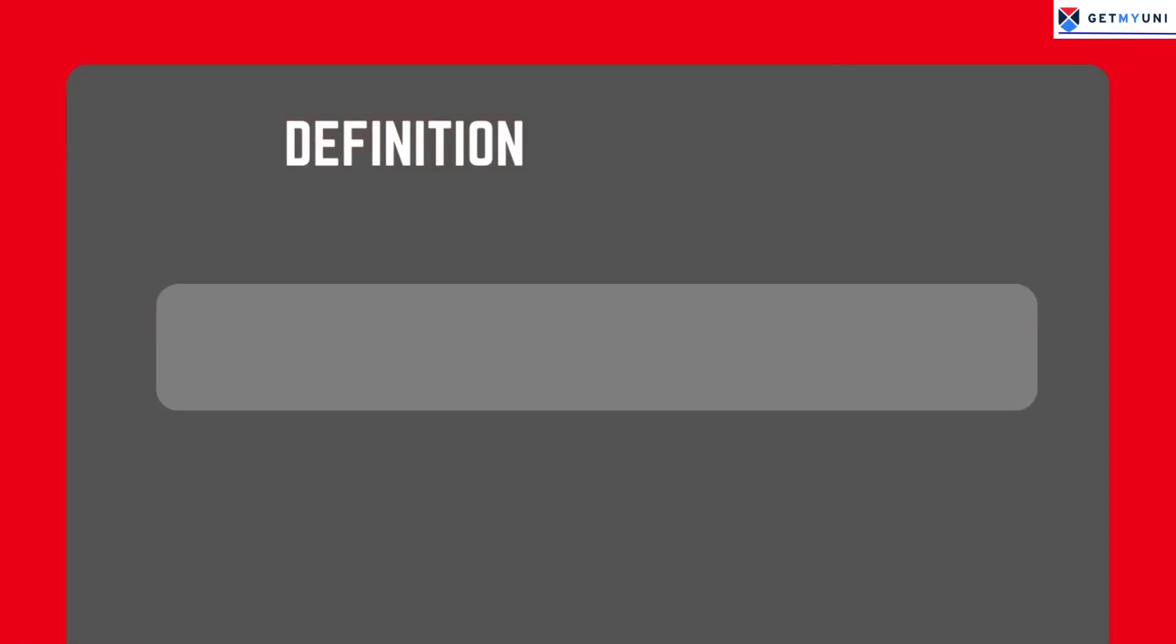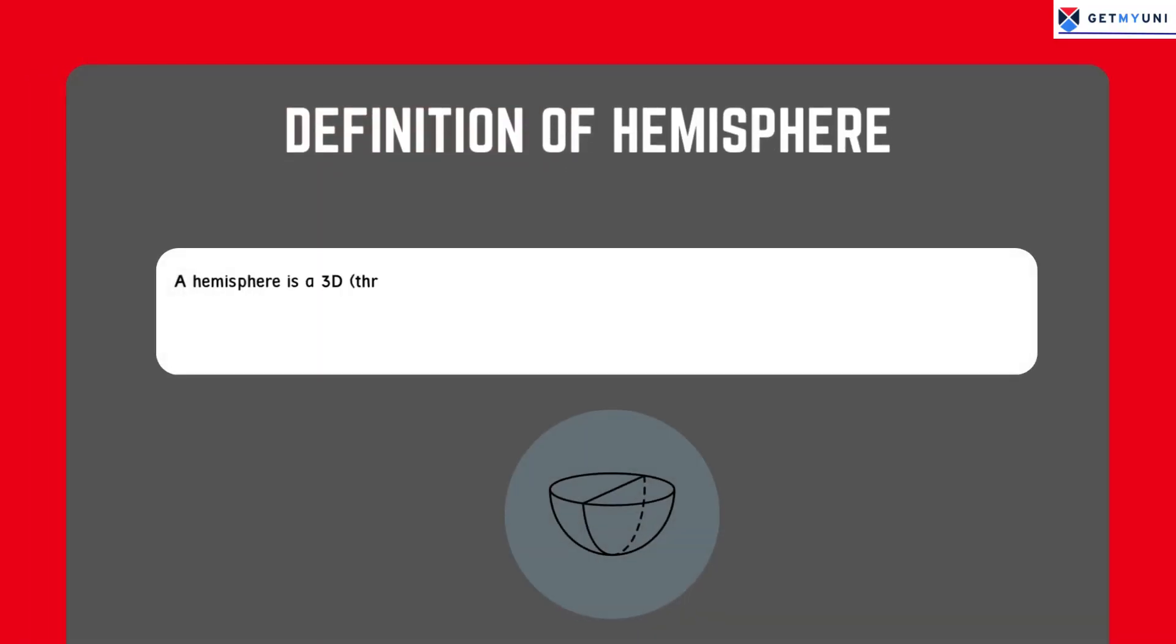A hemisphere is a three-dimensional shape that is half of a sphere. It has a curved surface and one flat circular base.